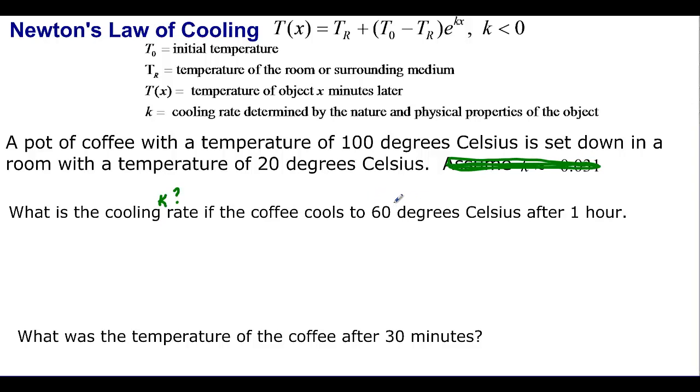And the 60 degrees Celsius is going to be the temperature. So that's T of X. And then this one hour is telling me that X is equal to 60. We have to talk about 60 minutes because up here it says minutes later.